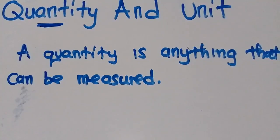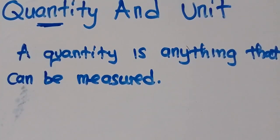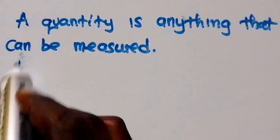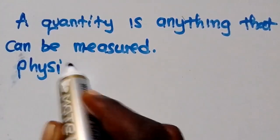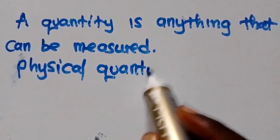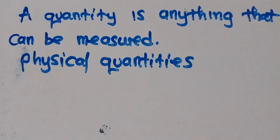So we have physical quantities. There are many physical quantities in physics. These physical quantities can be divided into two types. So we have two types of physical quantities. I want you to be writing these things down — these are basics that you need to know in physics.